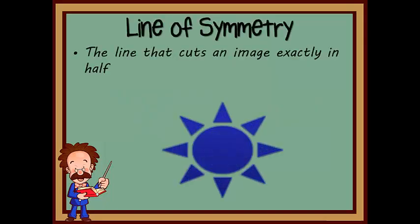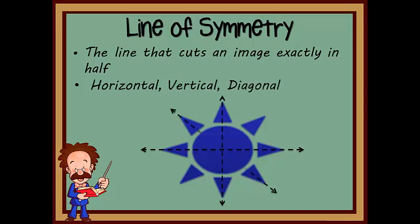Then we have the line of symmetry. To put it simply, this is a line that cuts an image, shape, or object right down the middle. A line of symmetry can be drawn horizontally across the image, vertically up and down the image, or diagonally across the image.